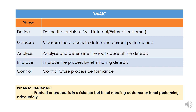DMAIC is a Six Sigma approach. The first phase is the Define phase. In the normal DMAIC approach, we first define the problem with respect to internal or external customer requirements. Then we measure the current state performance. In the Analyze phase, we measure the current state data and identify the root cause — what is the problem.